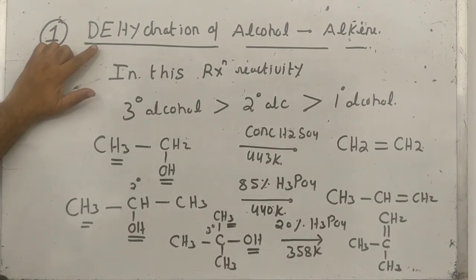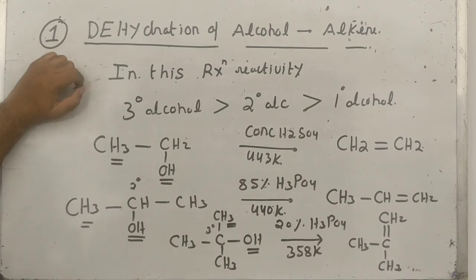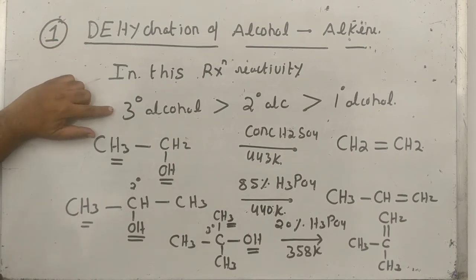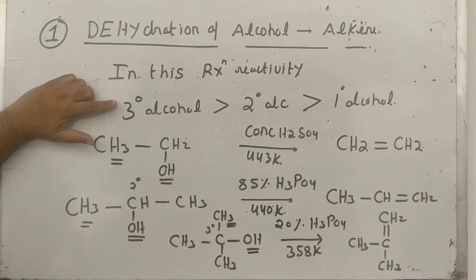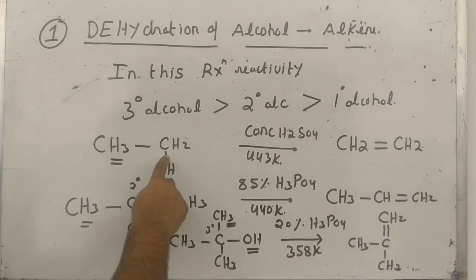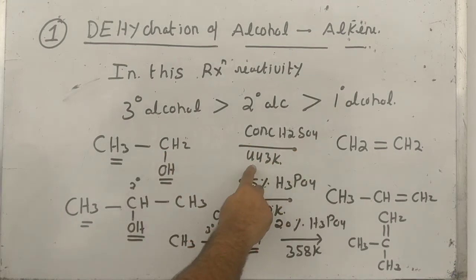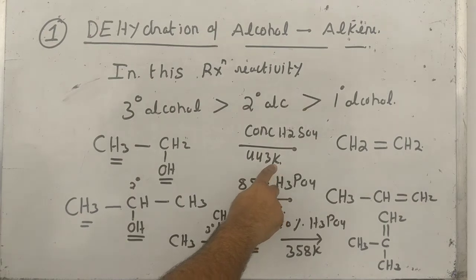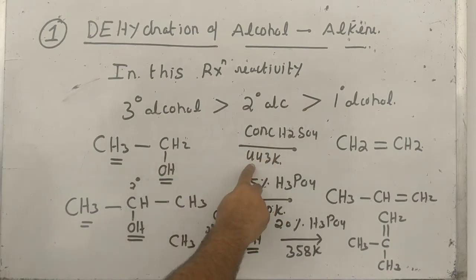Dehydration of alcohol gives you the formation of alkene. The rate of reaction is: primary alcohol undergoes dehydration very slowly, secondary slightly faster, and tertiary very quickly. As evident from the reaction conditions: if you have a primary alcohol and want it to undergo dehydration, you must use concentrated sulfuric acid and 443 Kelvin temperature.